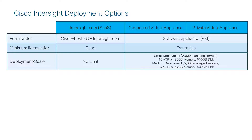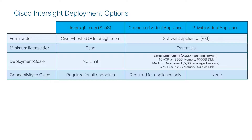For deployment scale, SaaS has no limit since it is a cloud offering. With the CVA and PVA, we're looking at roughly up to 5,000 managed servers. Regarding connectivity to Cisco — meaning whether the solution talks back to Intersight.com — the SaaS deployment obviously does, the Connected Virtual Appliance also does, but the Private Virtual Appliance does not.